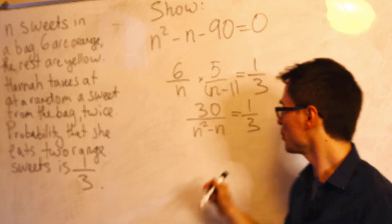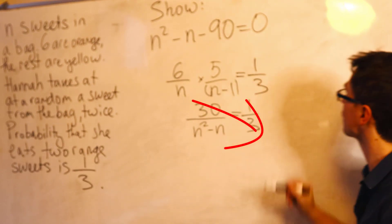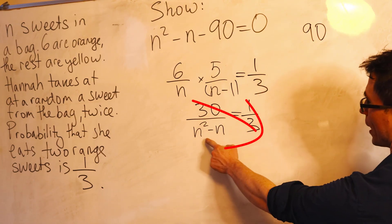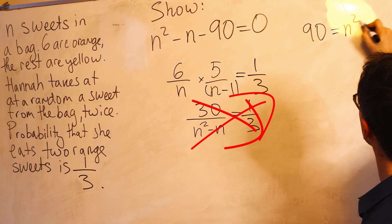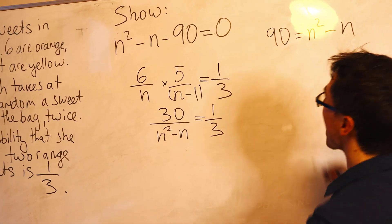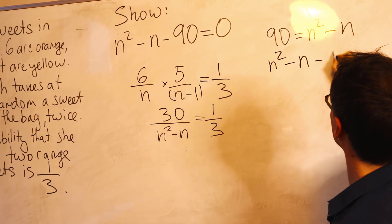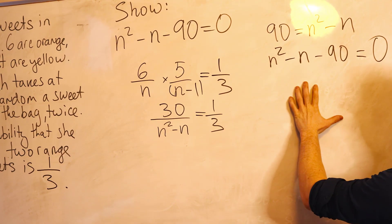And now I'm just going to use some cross multiplication. So I'm going to say that 30 times three, which is 90, will be given by N² minus N times one. So 90 will be N squared take away N. So from that, our expression N squared take away N take away 90 will be equal to zero by some rearranging.